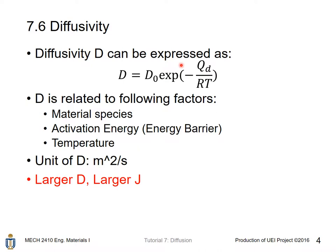Diffusivity D can be expressed as D equals D₀ (D₀ is a constant) times e to the power negative Qd over RT. Qd is the activation energy, R is gas constant, T is the temperature of that species.